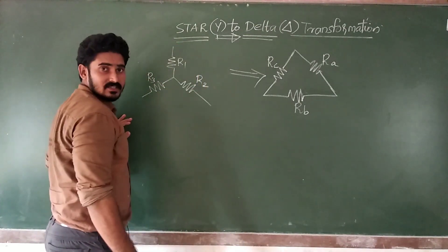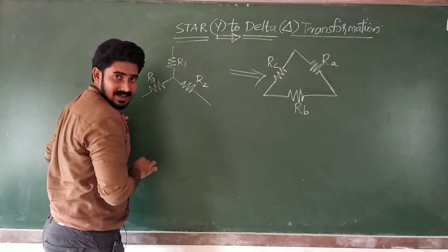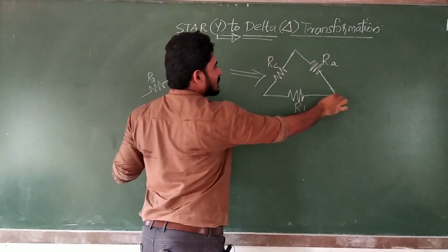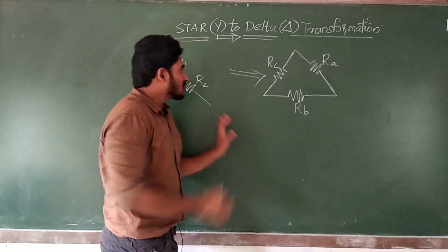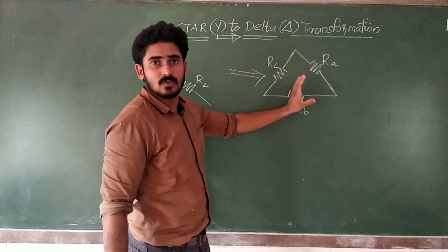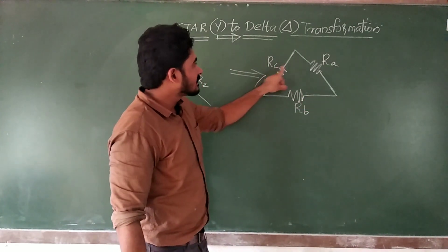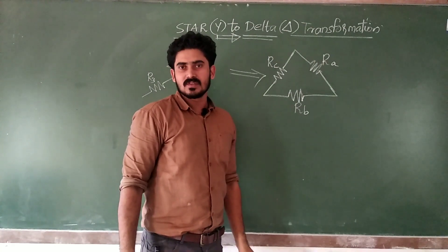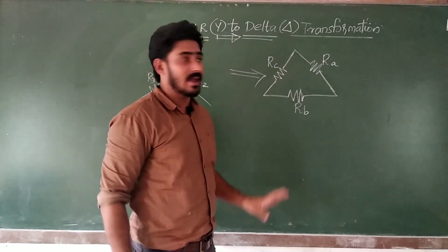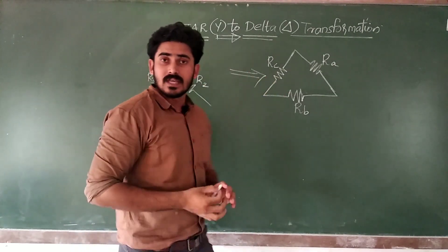You have a star connected network here — there are three resistors which are connected in star. Now we have to convert this into a delta connected form. These three resistors have to be converted into their corresponding delta form, but the values of resistors will be changed. So what will be the change in value of these resistors while we are transforming this connection from star to delta?